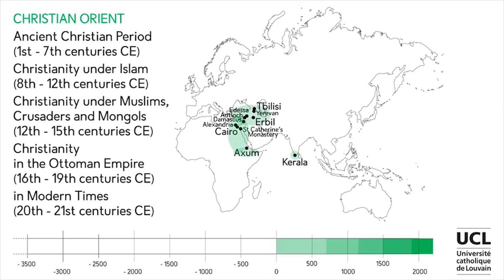Domain 10: Christian Orient. The important historical periods include the ancient Christian period, Christianity under Muslims, Crusaders and Mongols, Christianity in the Ottoman Empire and in modern times. The important sites include Axum, Alexandria, Cairo, St. Catherine on the Sinai, Damascus, Antioch on the Orontes, Edessa, Erbil, Yerevan, Tbilisi and Caraba. Christianity originates from the Middle East, from where it not only spread to Europe and subsequently to many other parts of the world. In the Middle East itself, it became the majority religion until it was gradually replaced by Islam from the 7th century CE onwards, although significant Eastern Christian communities live in the Muslim world until the present day.